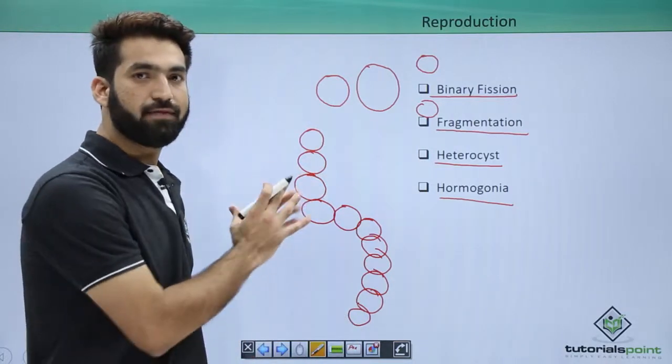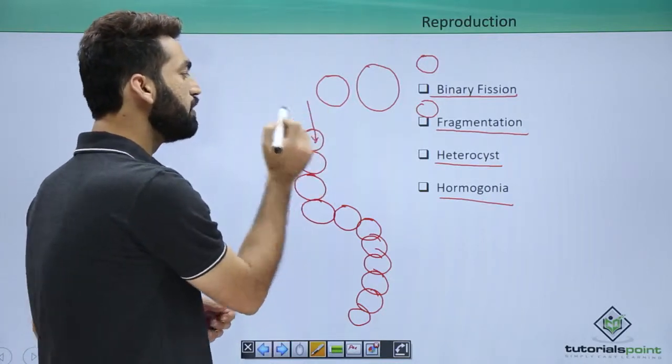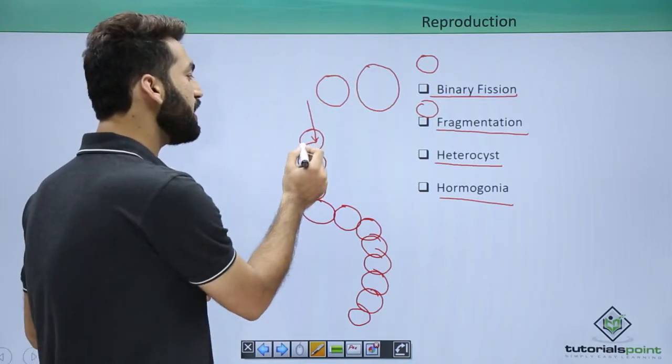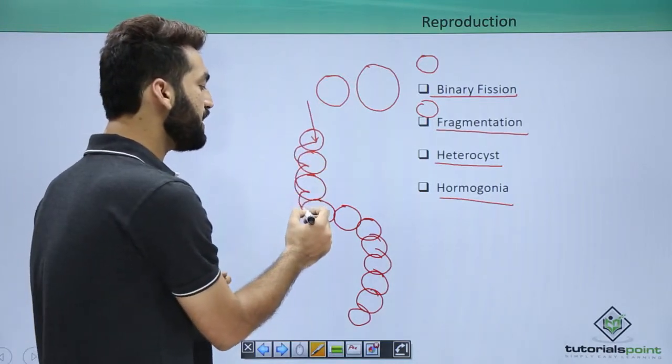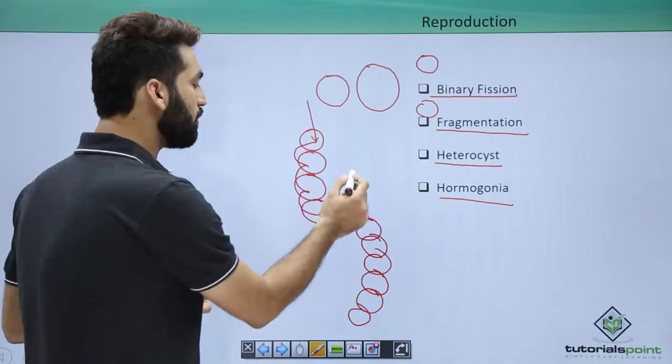In filamentous cyanobacteria, suppose a toxic substance comes and passes from cell to cell, killing the cells. The cells killed are called necredia.